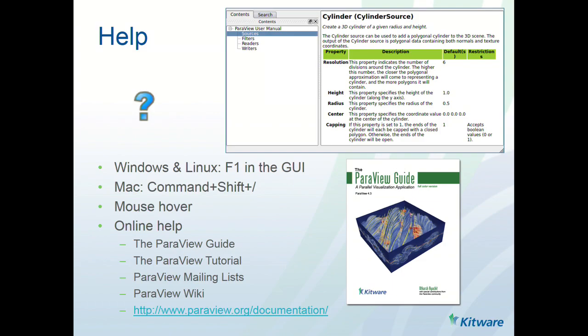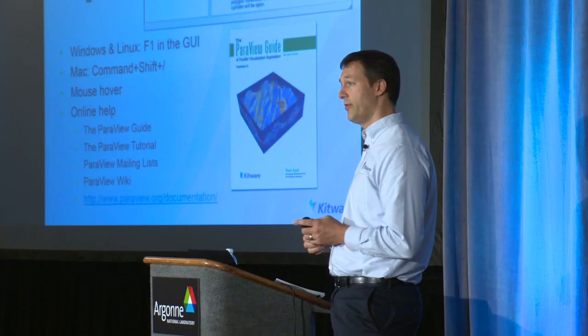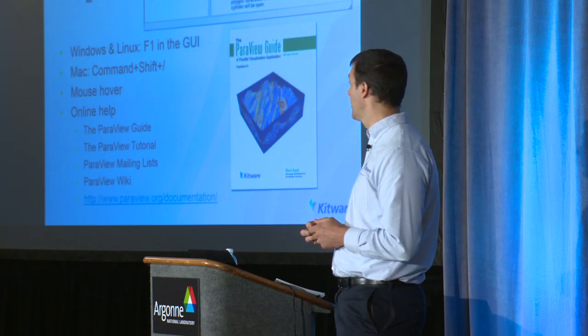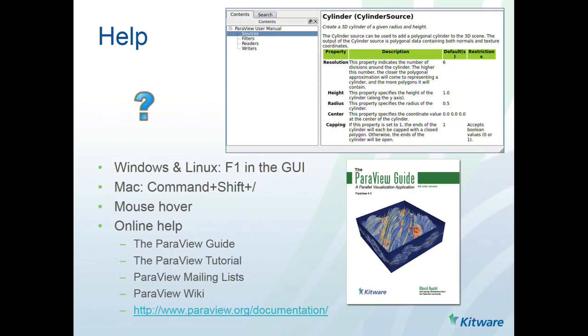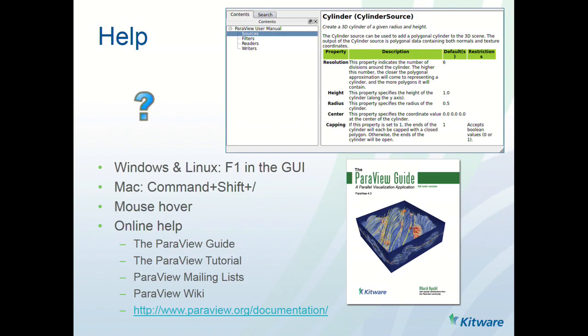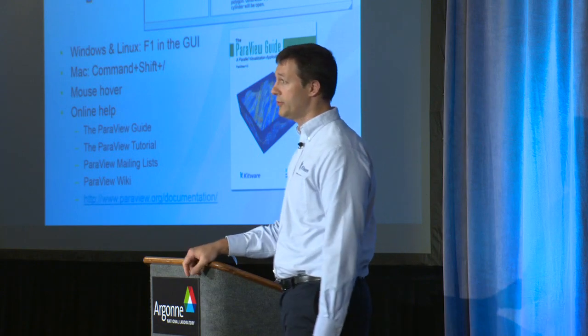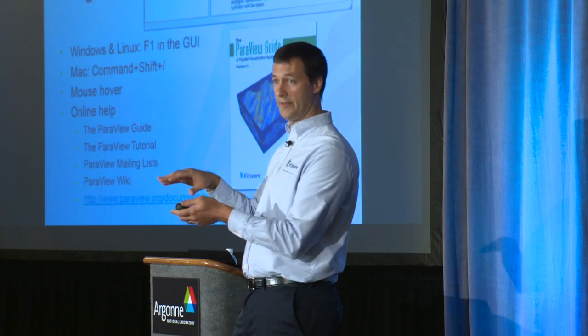These tools have a lot of functionality and an hour isn't enough to explain everything. We have a ParaView User's Guide — a couple hundred pages, freely available. The main ParaView website has documentation, and we have a mailing list at paraview@paraview.org. We typically get 20 to 30 emails a day and they generally get answered within a day or hours. There's also help in the GUI — the question mark guides you on specific filters. Hovering your mouse over GUI elements shows a pop-up with more information.